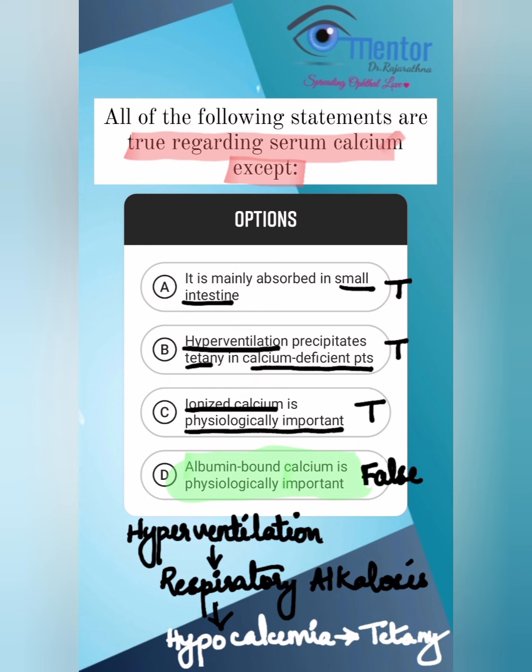Repeat after me. Calcium absorption — CASI, C-A-S-I or Kasi. Calcium absorption, small intestine. Ionized calcium is physiologically important.